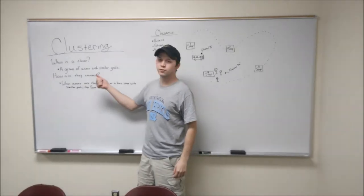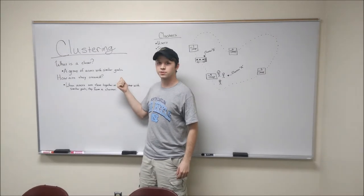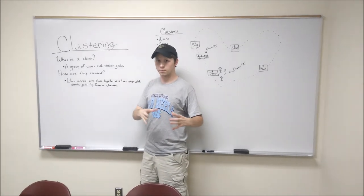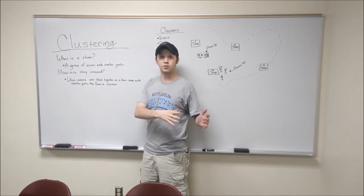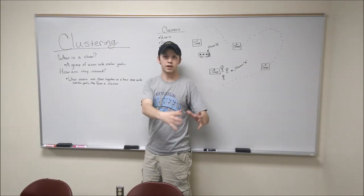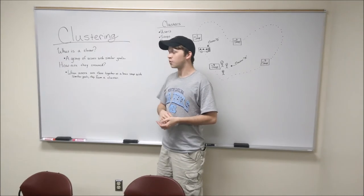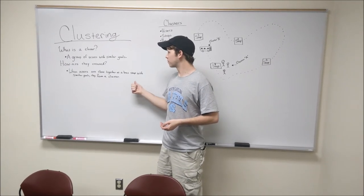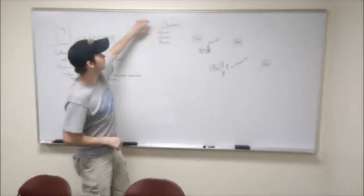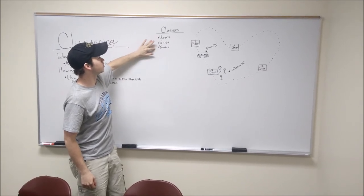I'm going to talk to you today about the idea of clustering. A cluster is a group of users with similar goals. So you have a group of users that are at a bus stop and wandering around the same route. The way we'll do our GPS prediction is to cluster those together and then monitor that cluster as it traverses throughout the route. When users are close together at a bus stop with similar goals, they form a cluster. The clusters are made of three main components: users, stops, and routes.